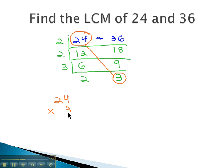24 times 3 will be the least common multiple. 3 times 4 is 12, 3 times 2 is 6, and one more is 7. 72 is our least common multiple.